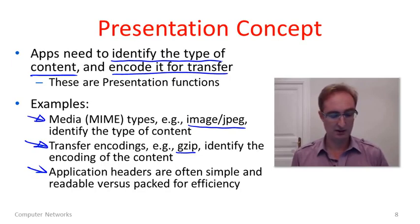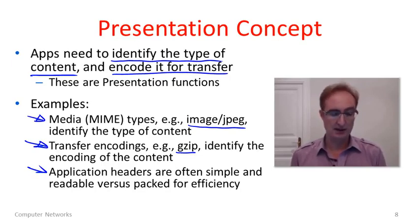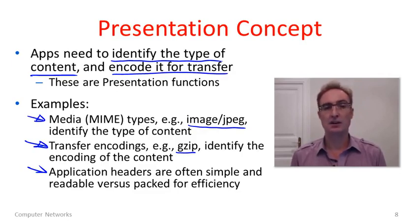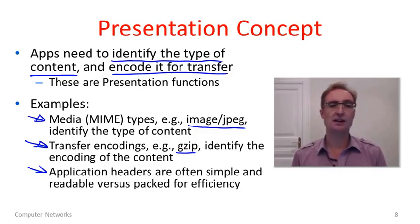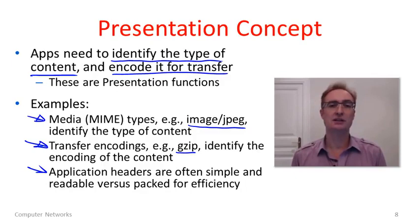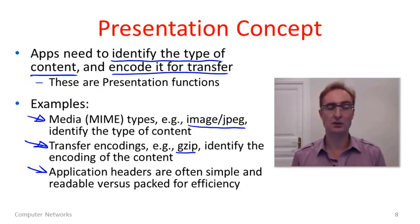I would also point out that often application layer headers tend to be simple and expressed in a way that's fairly easy to read, rather than compactly packed with a binary encoding for efficiency. That's because these headers are usually small compared to the content, and great value can be obtained by making them easy to inspect — for instance, when debugging, you can just look at the contents of the messages much more easily.